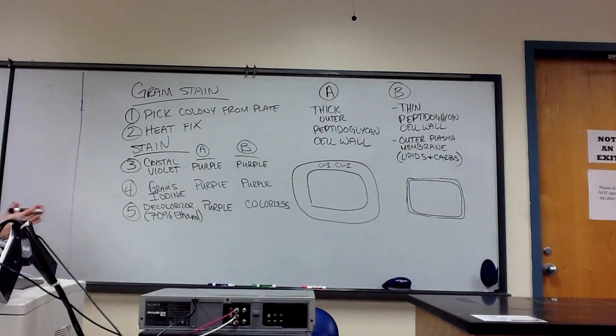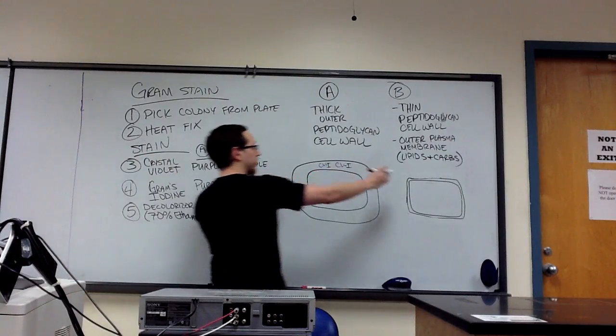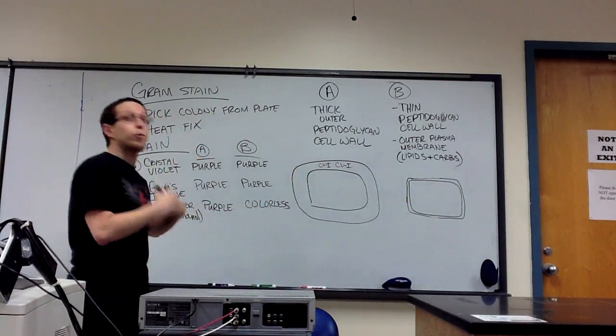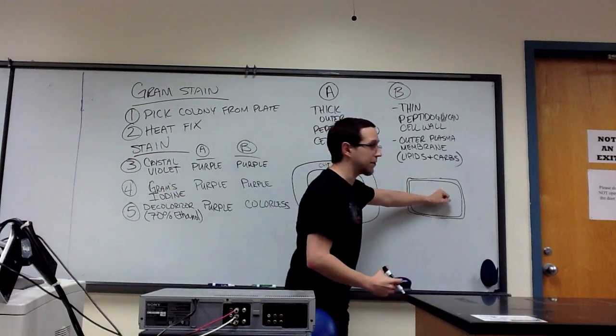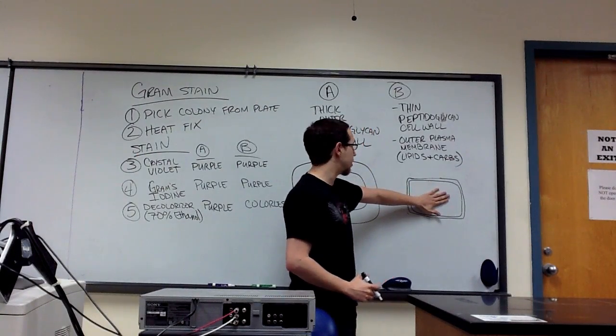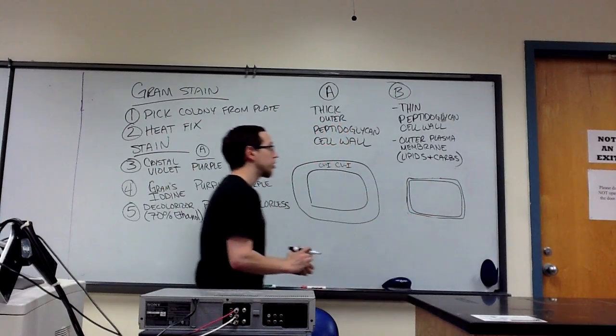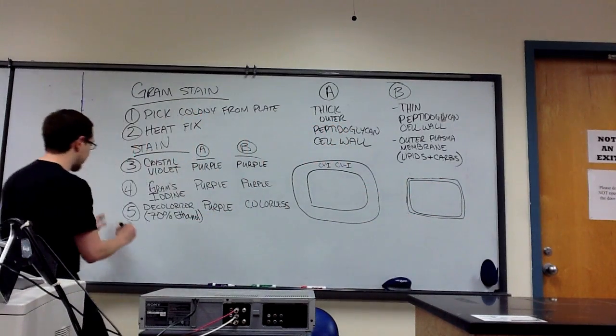And finally, at this point, we can see a difference between these two cells. This one is purple, this one has no color. But if we were trying to analyze this under a microscope and we only had this kind of cell on the slide, without a color, we would have difficulty visualizing these cells. So we need what's known as a counterstain.